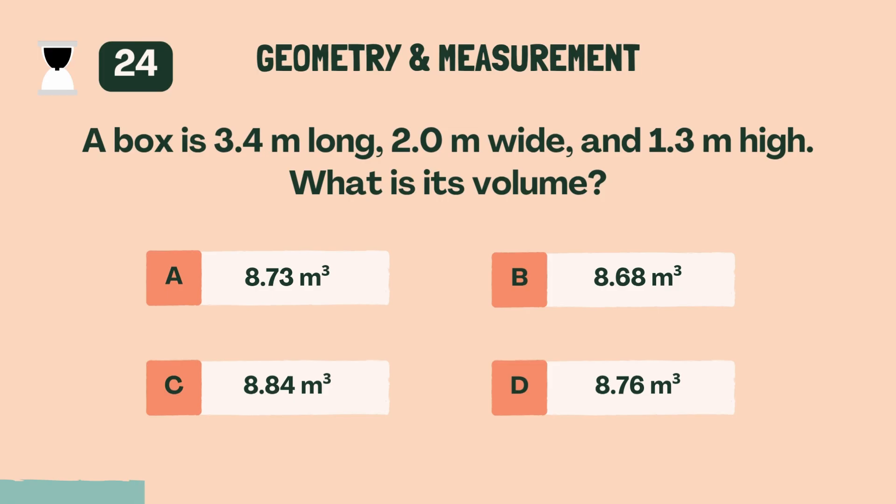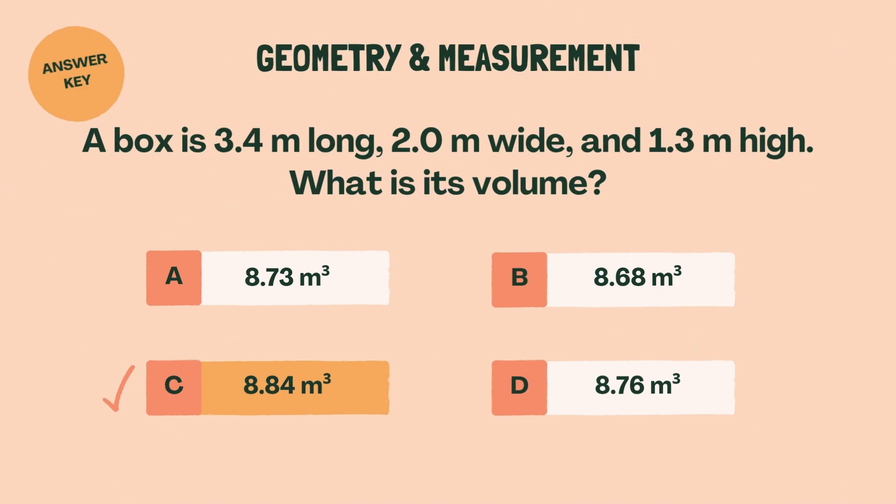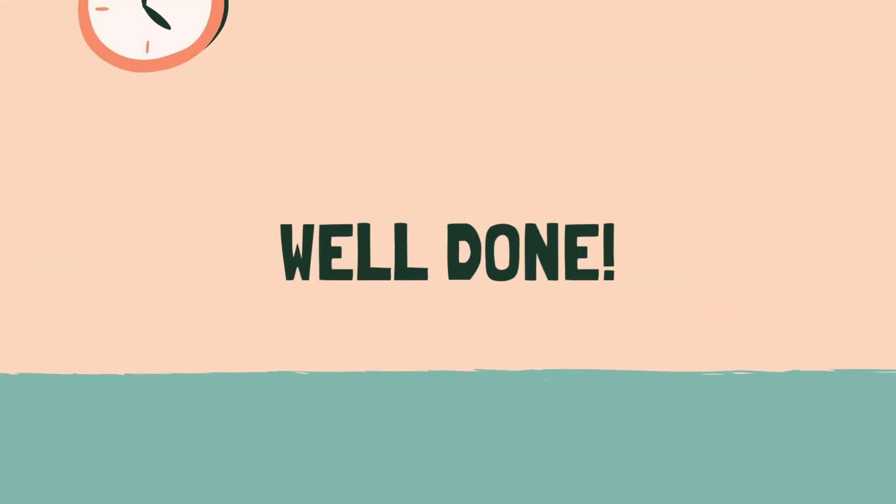A box is 3.4 meters long, 2.0 meters wide, and 1.3 meters high. What is its volume? C, 8.84 cubic meters. Well done.